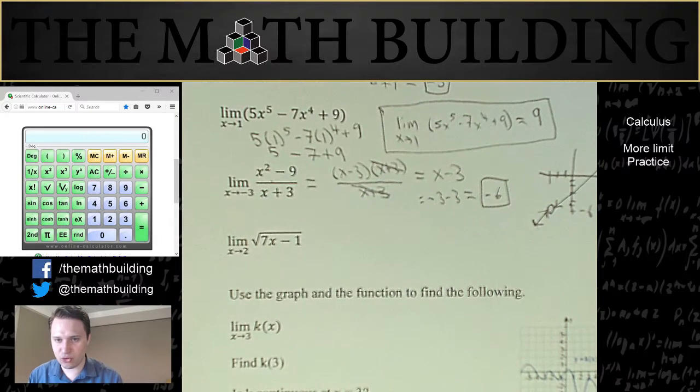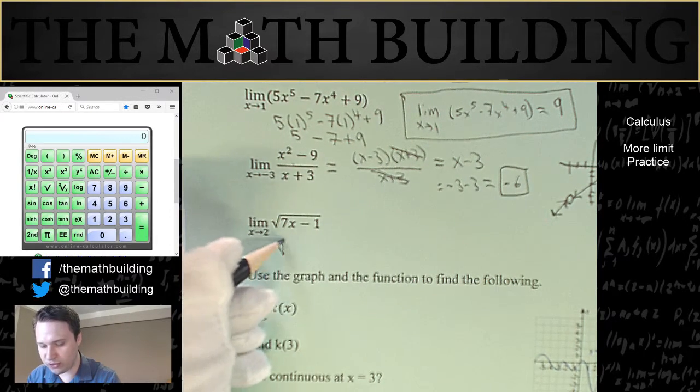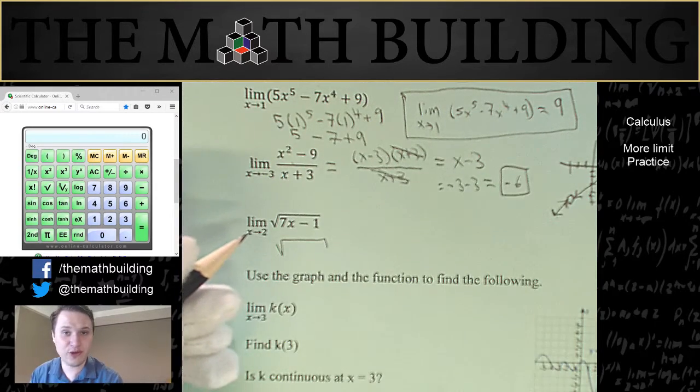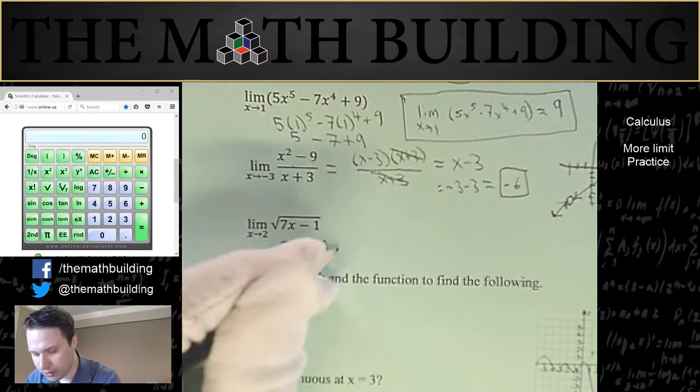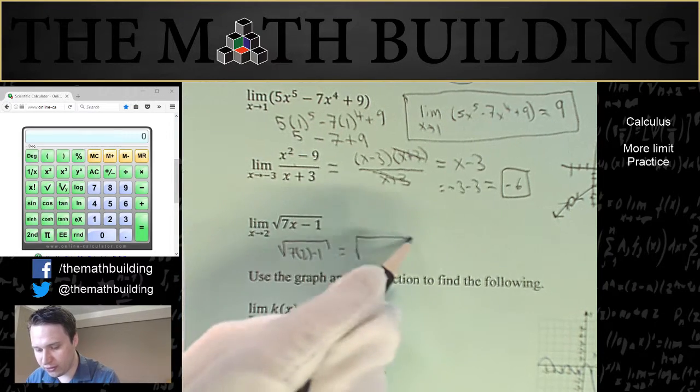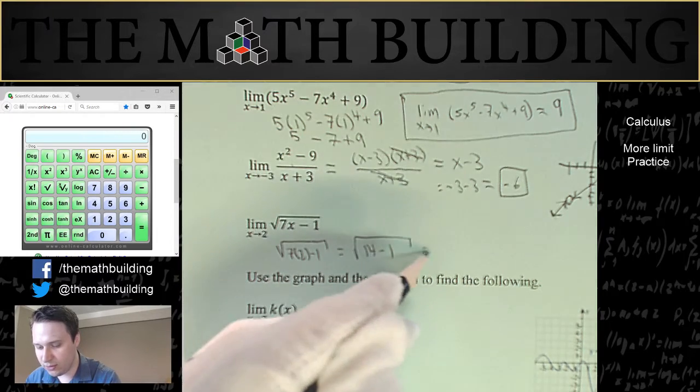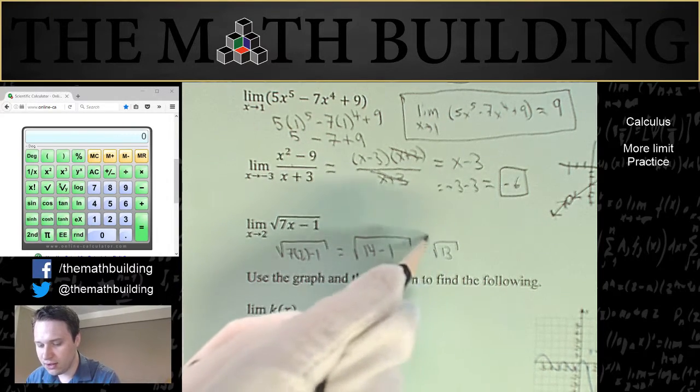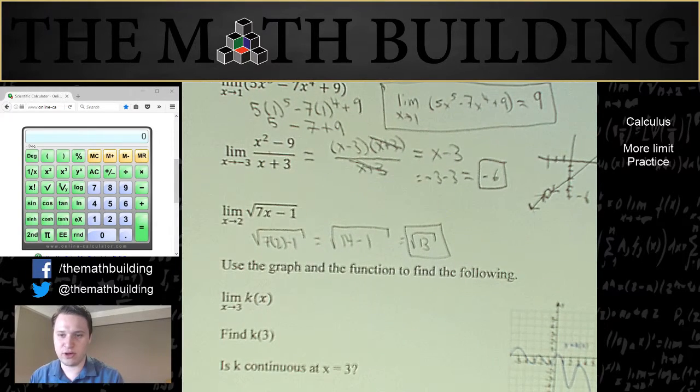Finally, let's find the limit of the square root of 7x minus 1. Again, square roots are well behaved as long as the square root exists. So let's plug in 2. So that's going to equal the square root of 14 minus 1 because we had 7 times 2. So that equals the square root of 13. So the limit of this one is going to equal the square root of 13.